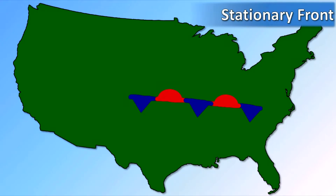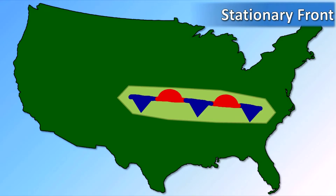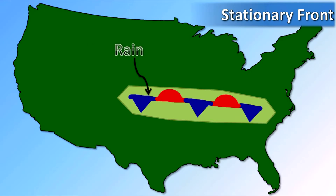A stationary front is exactly what it sounds like — a front that isn't moving. This front is indicated on a map with a red and blue alternating line with triangles and semicircles pointing in opposite directions. If a stationary front is in the neighborhood, you'll usually get cloudy skies and steady rain or storms for several days, until it either dies out or changes into a cold or warm front and moves away.